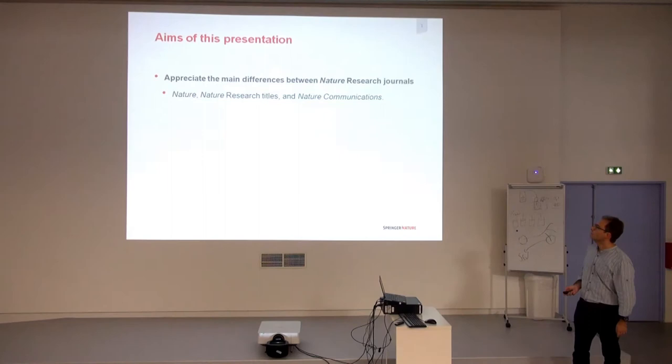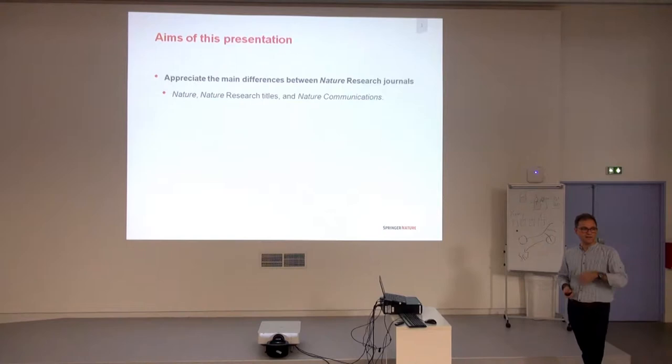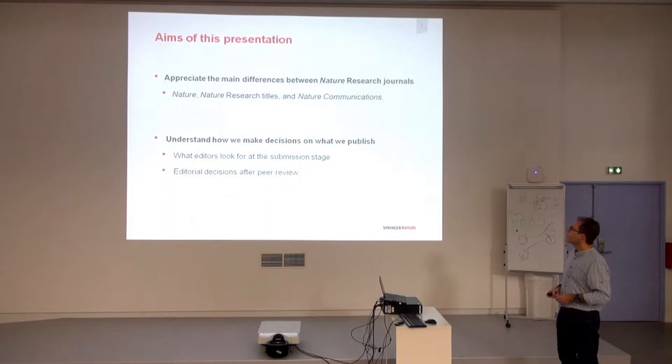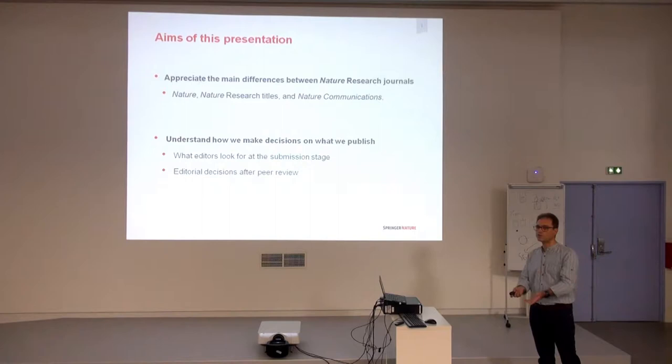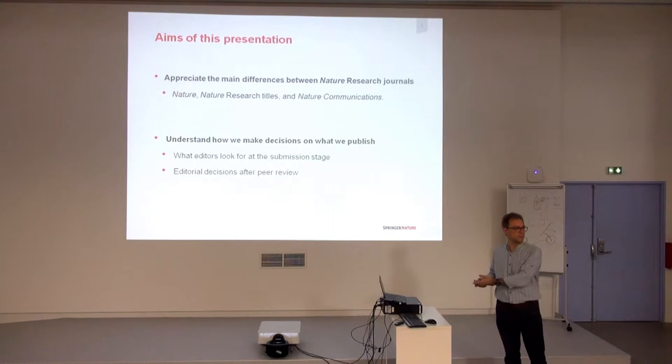I will try to explain the differences between the different Nature journals. We have Nature, and then we have Nature Microbiology, Nature Immunology, and many other Nature journals. Are they the same thing? Are they different? In which ways are they different? I also try to explain how editors make decisions on which papers we reject, which papers we set up for review, and how we decide whether to accept the paper or not.